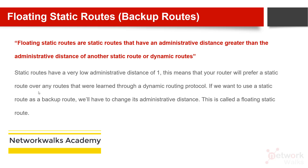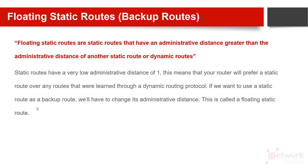Since static routes have a very low admin distance of one, the router will prefer a static route over other routes. But if we want to use a static route as a backup — for example, if there is an OSPF route in the network and we want OSPF to take first priority while static is just for backup — we change the default admin distance. The command is: ip route [network] [network mask] [admin distance]. This is called a floating static route or backup route.